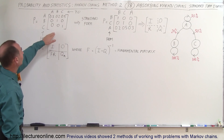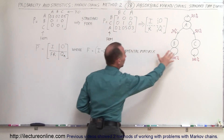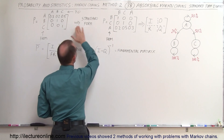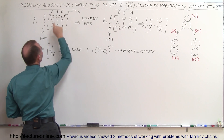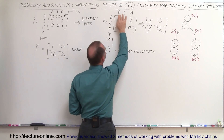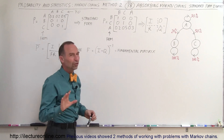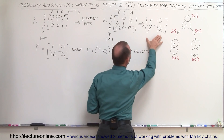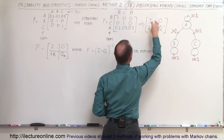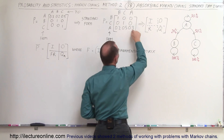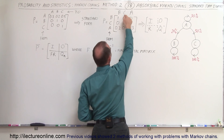Here is our initial transition matrix representing this situation. We want to first put it into standard form, which means instead of ordering from ABC to ABC, it becomes from BCA to BCA, so we have the ones on the diagonal and zeros everywhere else. In the standard matrix we have the identity matrix in the upper left, the zero matrix, the R matrix, and the Q matrix. Q is only one portion of the matrix, R is another portion, O is the zero matrix, and I is the identity.